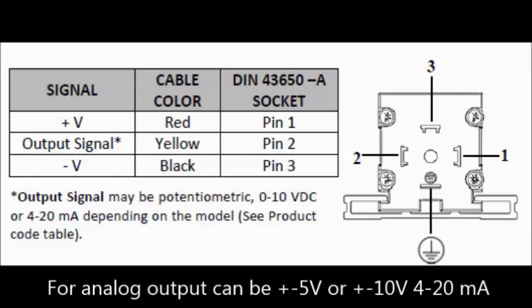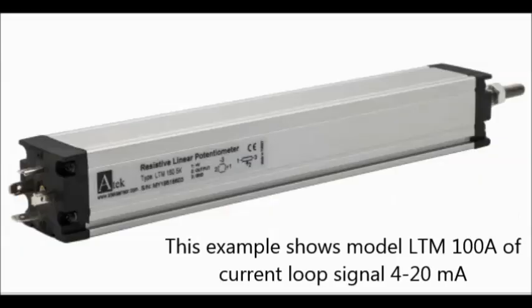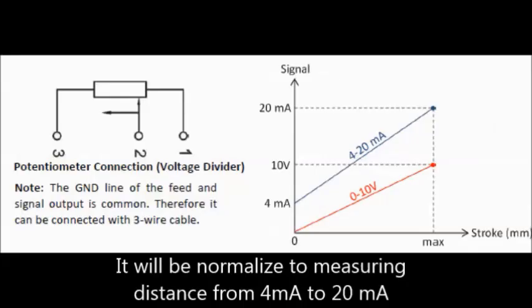For analog output can be plus or minus 5V or plus or minus 10V, 4 to 20mA. This example shows module LTM 100A with recurring loop signal 4 to 20mA.